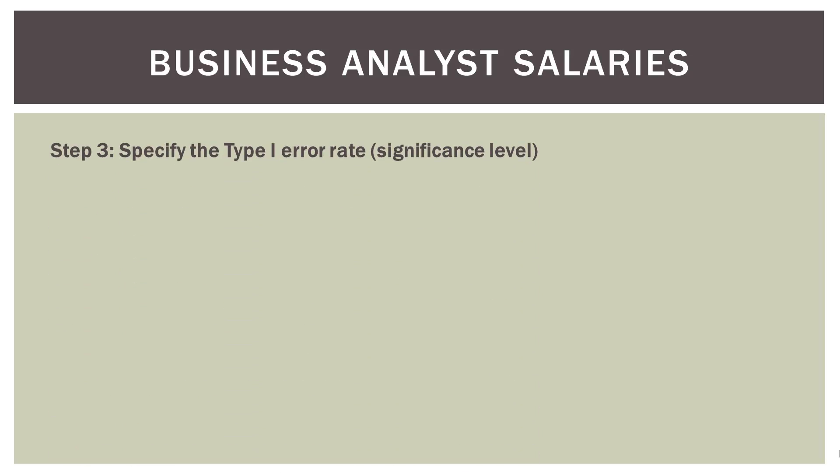Step three: specify the type one error rate, or the significance level. This is up to us, so I'm going to choose the middle ground and set alpha at 0.05. I am okay with the possibility of making a type one error 5% of the time.